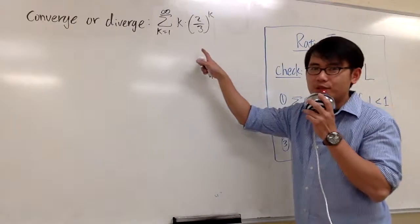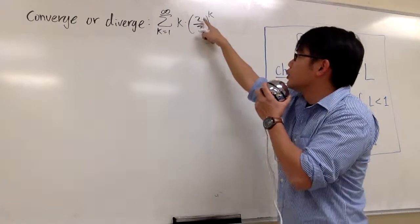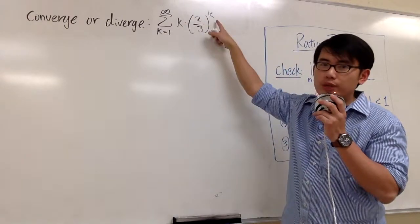We would like to know if this series converges or not: sigma when k goes from 1 to infinity, k times 2 over 3 in parenthesis, raised to the k power.